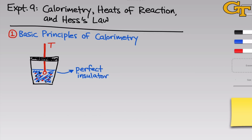Let's now put a quantitative spin on this idea. Imagine the red and black dots in solution inside the calorimeter react to form a product in which the two have bonded to one another. We can ask about the change in enthalpy associated with this reaction, and calorimetry can be used to directly measure this delta H. To see this quantitatively, let's start with the first law of thermodynamics, which says that the change of internal energy associated with the change from reactants to products is equal to Q, the heat released or absorbed by the reaction, plus W, the work done by the reaction or on the reaction by the surroundings.